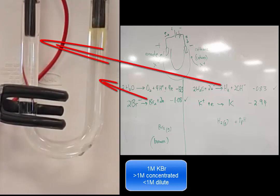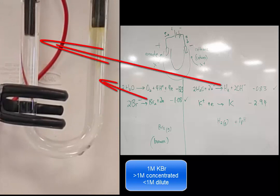And so you can also see the bromine, the yellowish color coming down on the right-hand side.